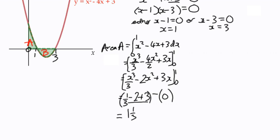We're left with a third subtract 2 add 3. Negative 2 add 3 is positive 1, so we've actually got 1 and a third. That's the area of A, 1 and 1 third square units.